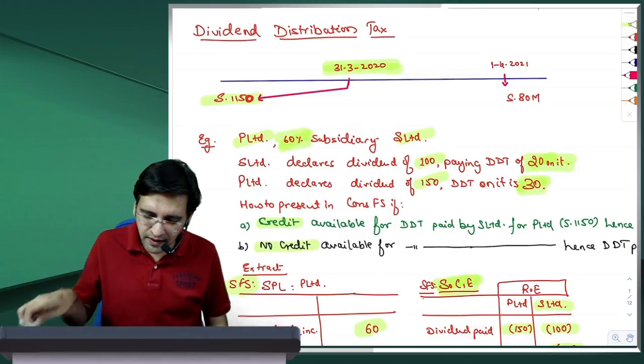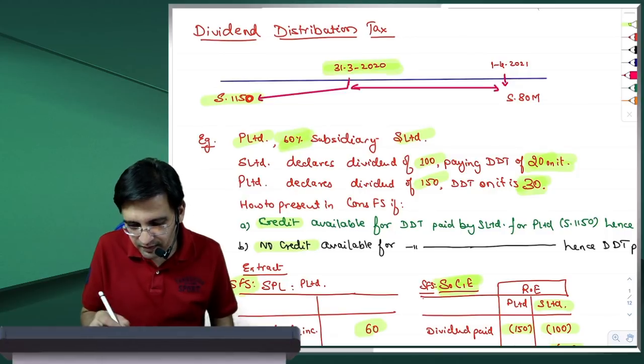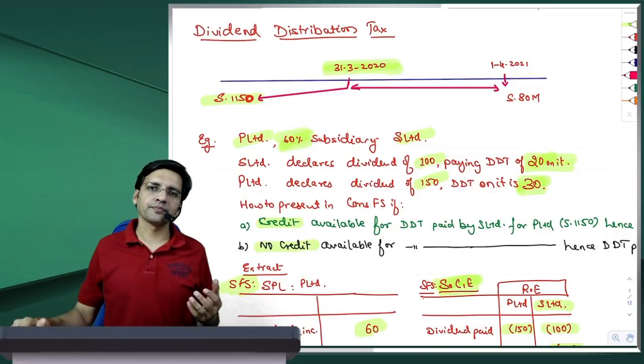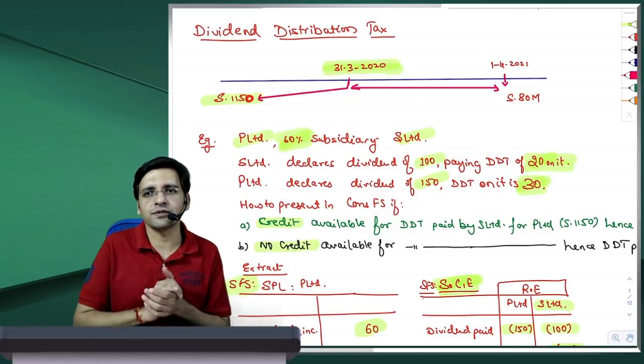Lekin agar subsidiary ne jo dividend distribution tax pay kiya 20 rupay ka, usmei jo mera share hai 12 rupay, agar mujhe uska credit nahi milta hai, to maine kitna tax pay kiya hooga? 30 rupay ka DDT maine actual pay kiya, par subsidiary ne jo 12 rupay pay kiya, subsidiary meri company hai, usne pay kiya maine pay kiya, uske 12 rupay bhi meri doop gaya. Usse institute mein kaha gya hai ki aapko tax expense mein add karke dikhana hooga.